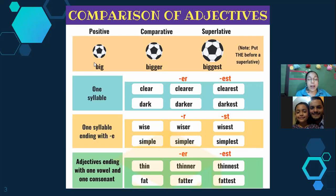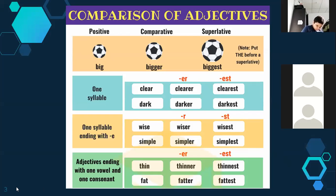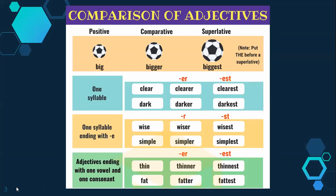Carlos Cornejo reads the next row: adjectives ending with one vowel and one consonant. We have thin, thinner, thinnest. The particular case is that we double the consonant — in this case, 'n'. Thin becomes thinner. Fat doubles the letter 't': fatter, fattest. That's the rule when an adjective ends with a vowel and a consonant.